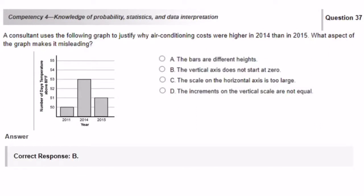A consultant uses the following graph to justify why air conditioning costs were higher in 2014 than in 2015. What aspect of the graph makes it misleading? A says the bars are different heights. Well, that's okay. They're not misleading. One is at 50, another is at 53, and another is at 51. They're just fine.